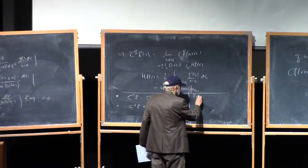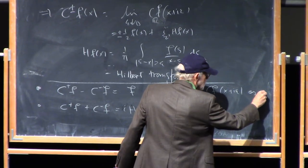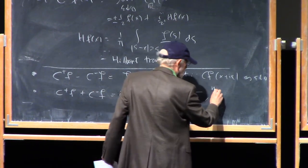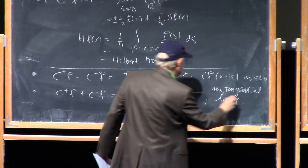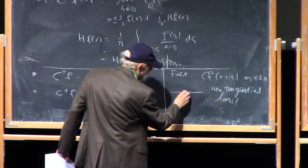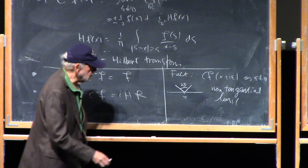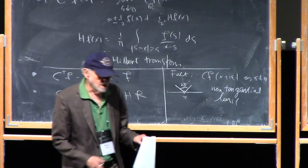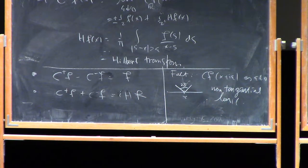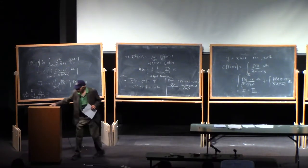So far I'm working with f in Schwartz space. The key things to observe are: c-plus of f minus c-minus of f equals f, and c-plus of f plus c-minus of f equals i times the Hilbert transform of f. One further point: we looked at the limit as epsilon goes down to zero, and you can replace it with what's called a non-tangential limit. Instead of just taking the vertical limit, you can take a cone of opening angle 2-theta at the point x and take the limit as you approach from anywhere within the cone. In general, a parabolic approach would not work. All the limits will be non-tangential pointwise limits.